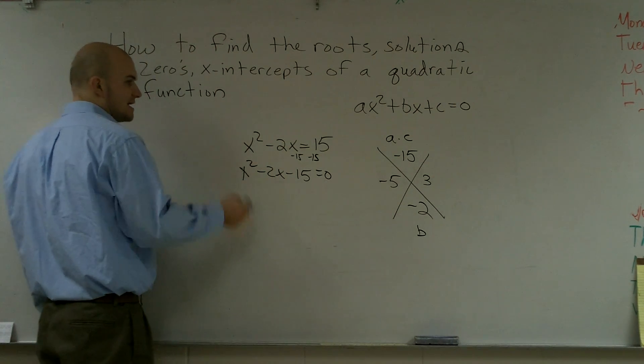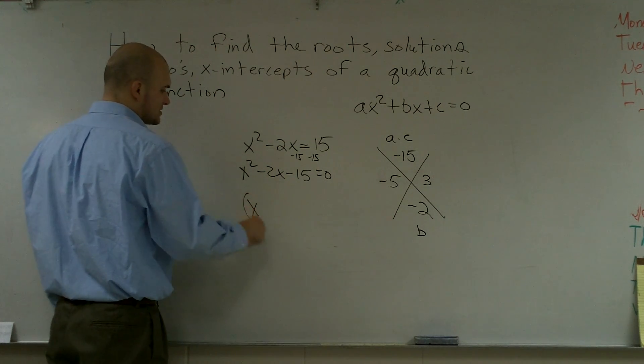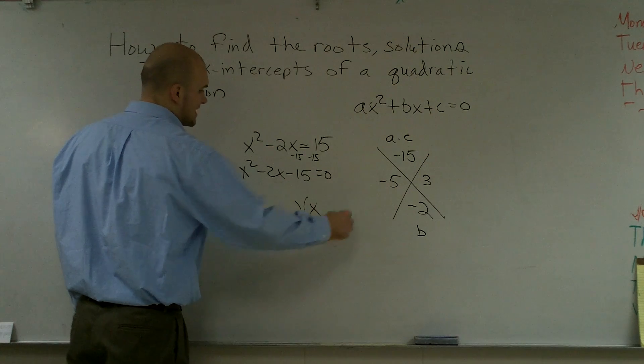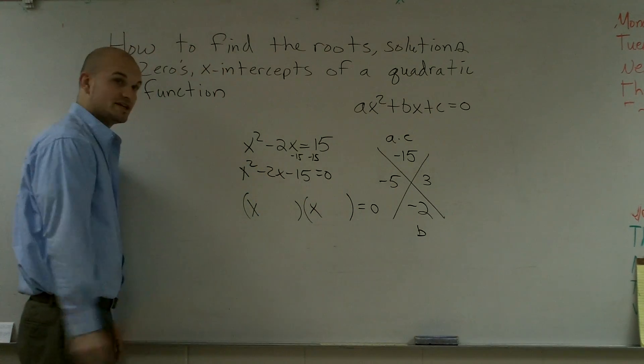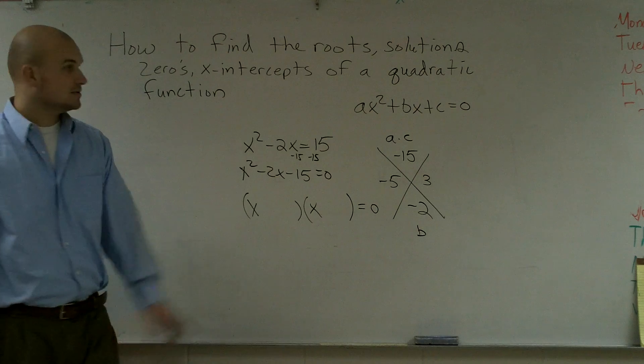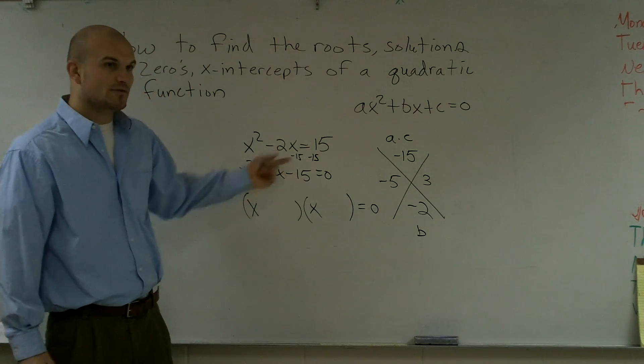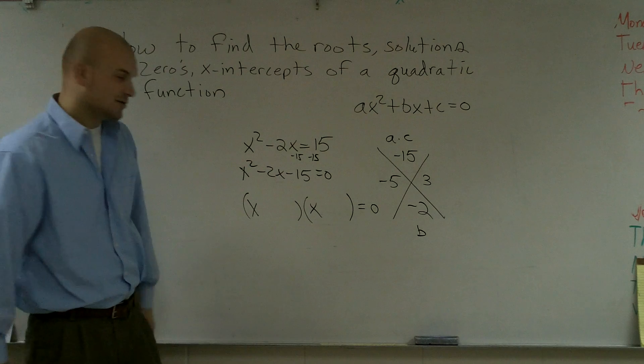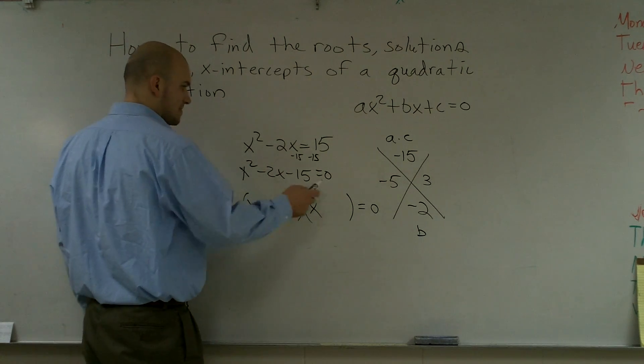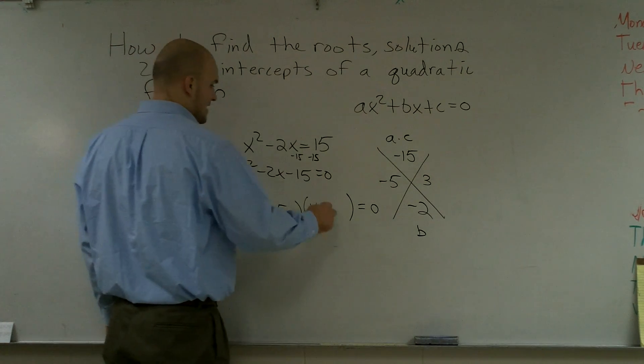So therefore, I just set up, since this is x squared, I'm just going to have my two binomials. It's going to be x times x equals 0. Make sure you remember to put the equals 0. This is an equation. So all you're doing is you're just rewriting this as a multiplication of two binomials. So that's going to be x minus 5, x plus 3.